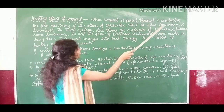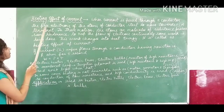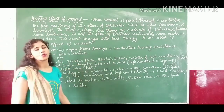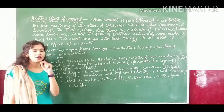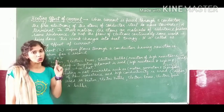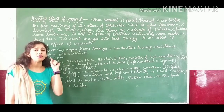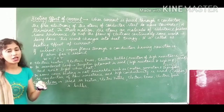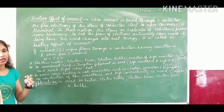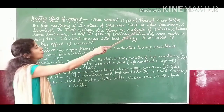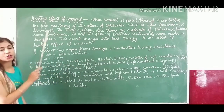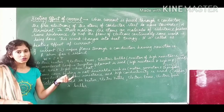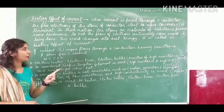When current is passed through a conductor, the free electrons of the atoms of the conductor start to move. Whenever current is passed through the conductor, the free electrons present in it start to move. The movement of these free electrons will be towards the positive terminal, because electrons carry negative charge, so they move towards the positive terminal.